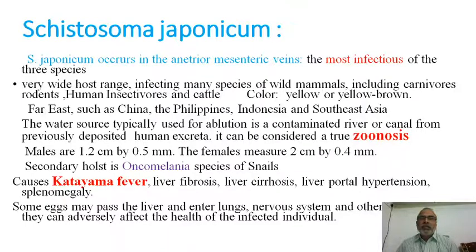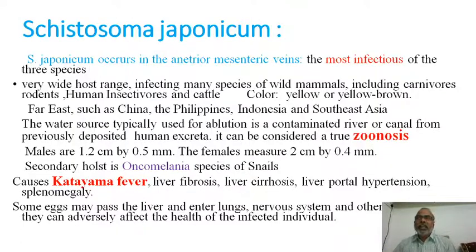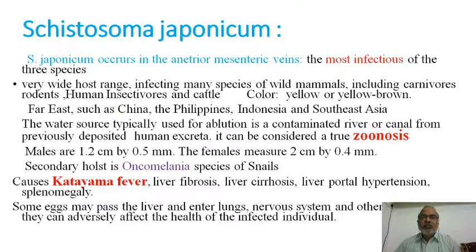Schistosoma japonicum occurs in the anterior mesenteric veins and is the most infectious and most dangerous of the three species. Its infection range is very wide, infecting not only human beings but also many mammalian species including carnivores, rodents, insectivores, and cattle. Schistosoma japonicum appears yellowish or yellowish-brown in color and is highly prevalent in Far East countries such as China, Philippines, Indonesia, and South Asia.